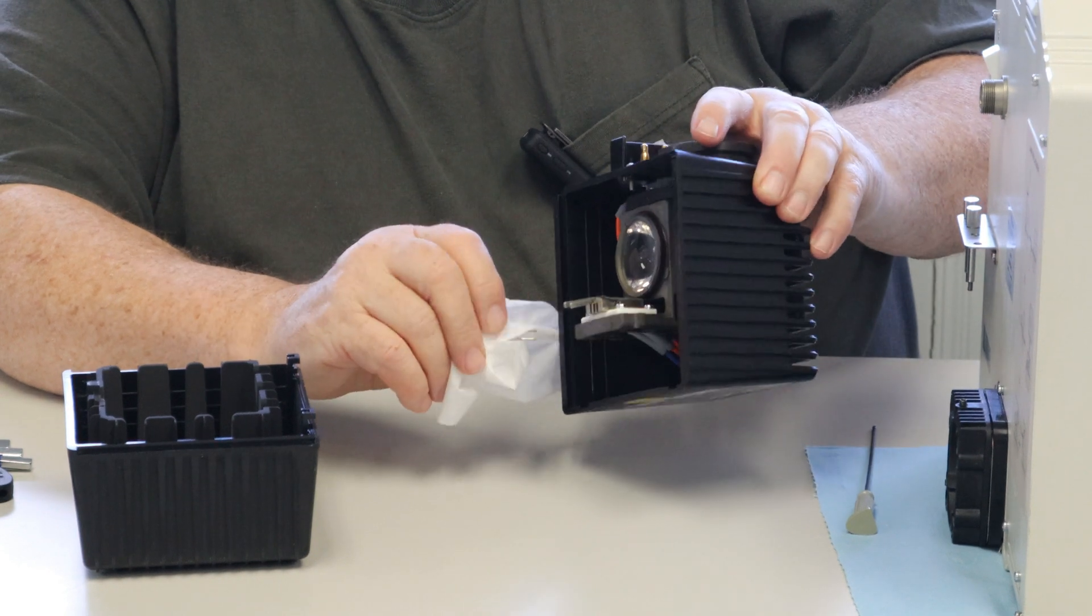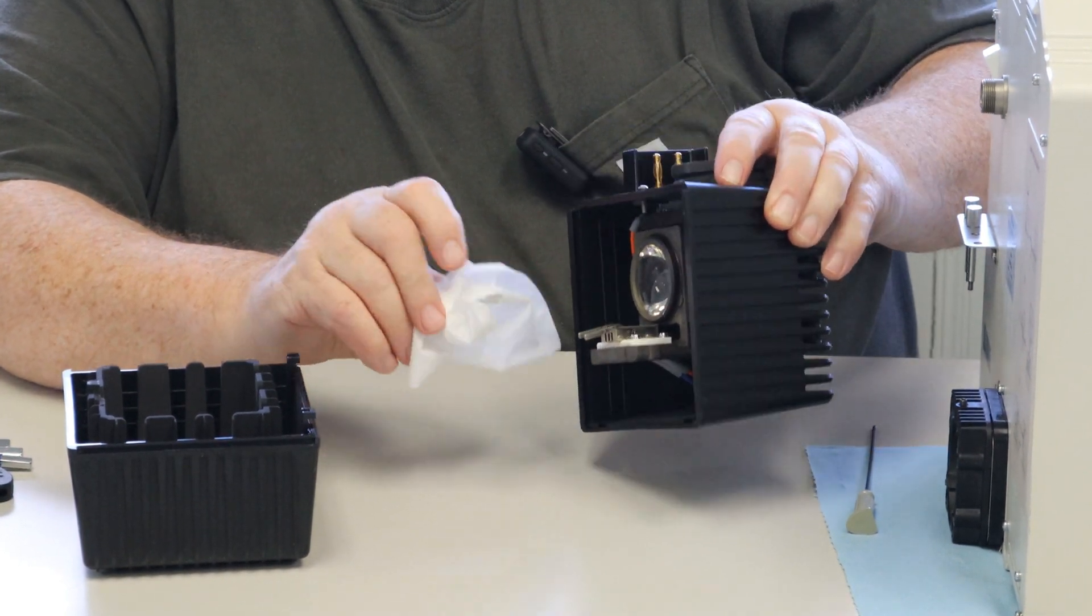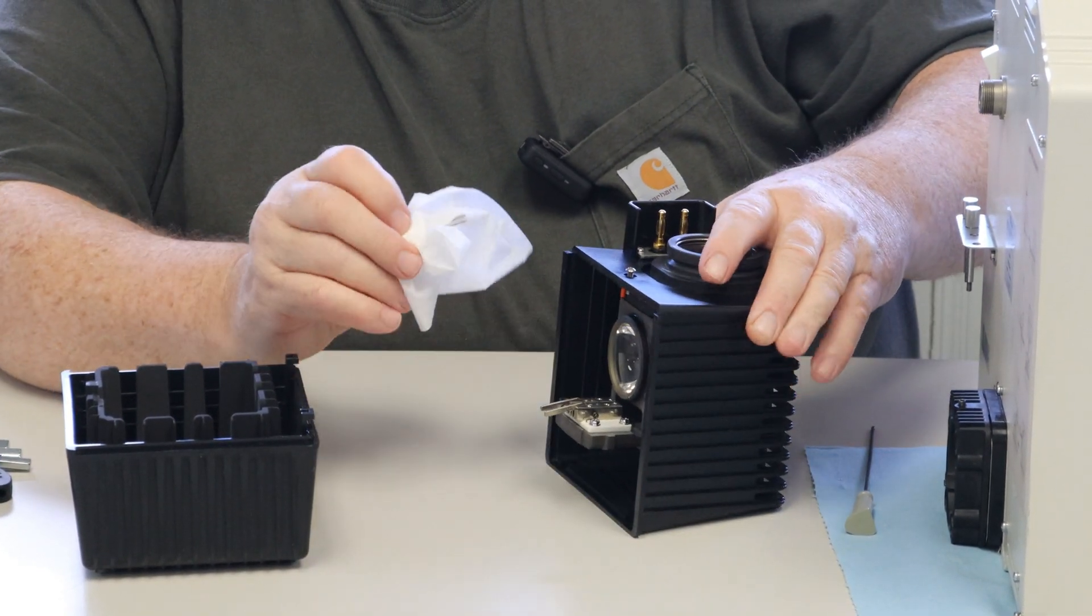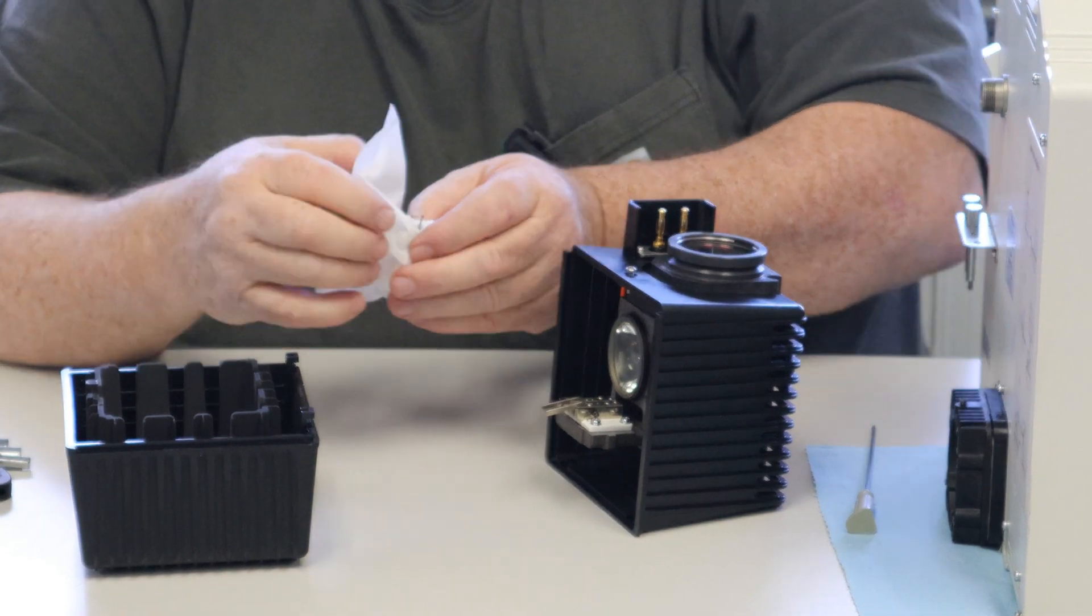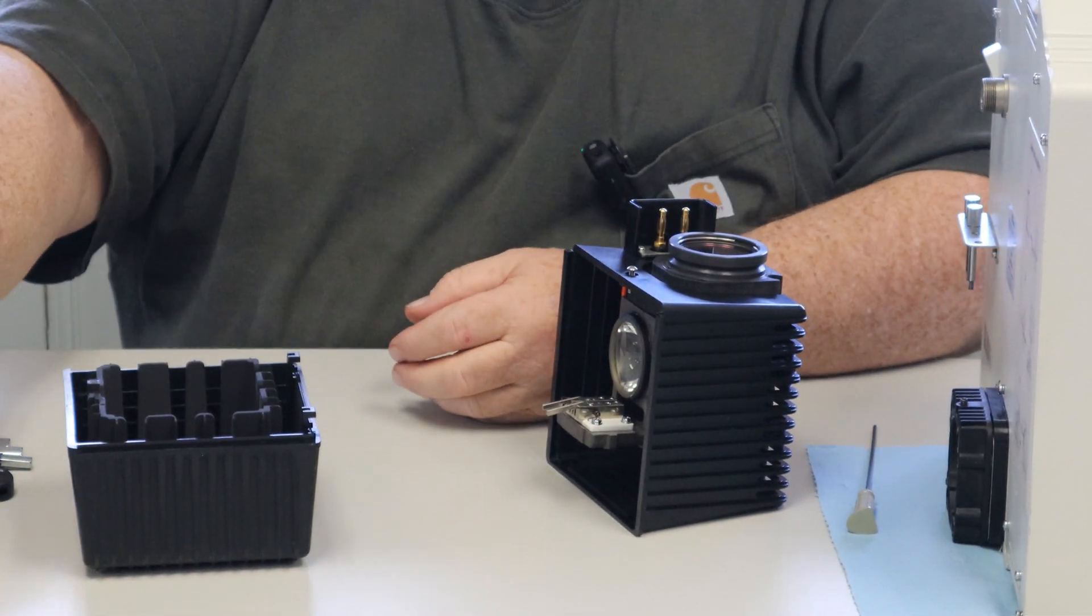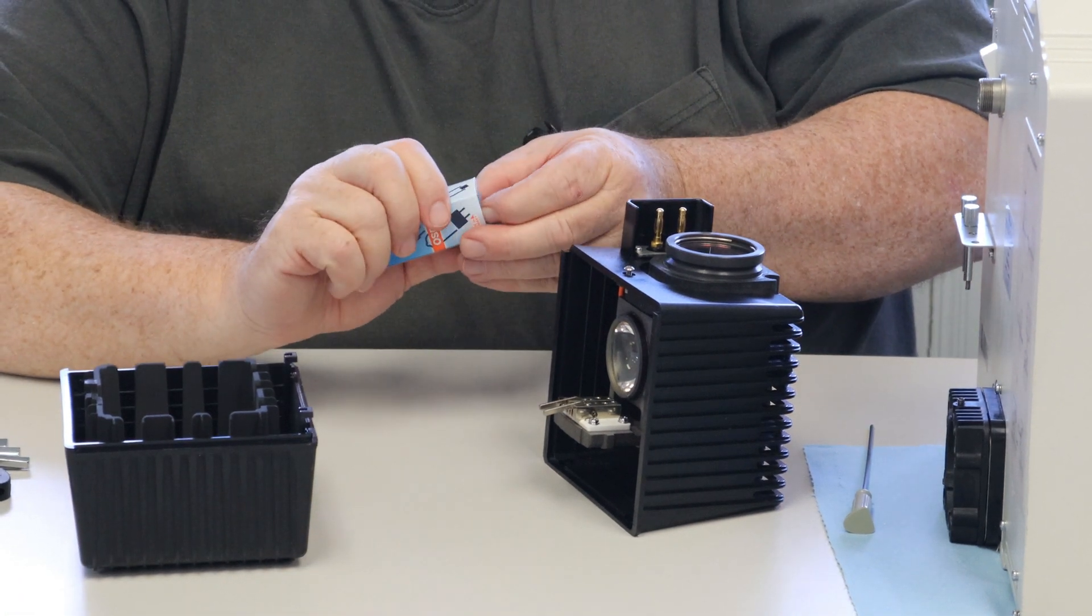On this scope again, with this set up, you don't have to worry about the arcing in the lamp housing. Now go to the new bulb.